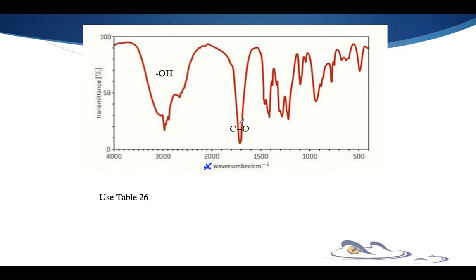Here you can see a carbonyl group, and this peak or valley takes place right around the 1750-1800 mark on the wave number. Here you can see a hydroxyl group, and hydroxyl groups tend to take place greater than 3,000. So the wave number is one of the things we pay attention to — where it's located — and specific bonds will locate themselves at specific points on the wave number.